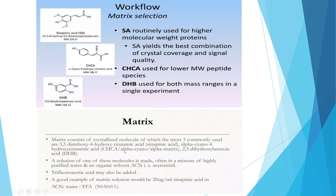These three matrix compounds — sinapic acid, alpha-cyano-4-hydroxycinnamic acid (CHCA), and 2,5-dihydroxybenzoic acid — are chosen based on their properties. A solution of one of these molecules is made in highly purified water and an organic solvent. Acetonitrile and trifluoroacetic acid may also be added. A good example of a matrix solution would be 20 microgram/mL cinnamic acid in acetonitrile/water/trifluoroacetic acid in a 50:50:0.1 ratio.